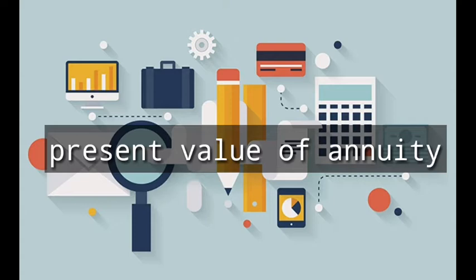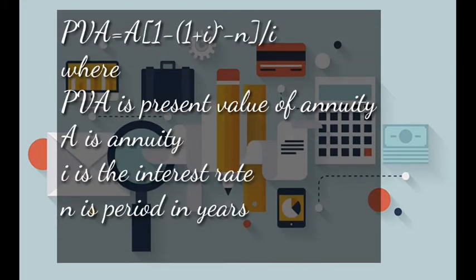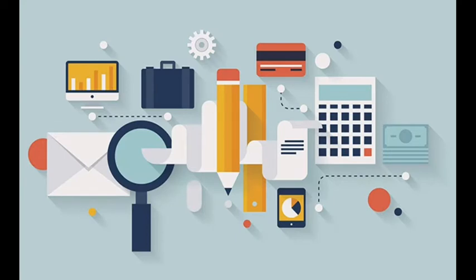In this video we are going to look at how to calculate the present value of annuity. The formula is: PVA equals A times bracket one minus bracket one plus i bracket to the power negative n, all over i. Where PVA is the present value of annuity, A is the annuity amount received per year, i is the interest rate, and n is the period in years.